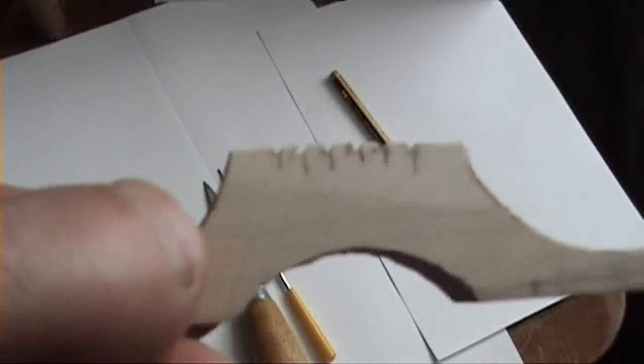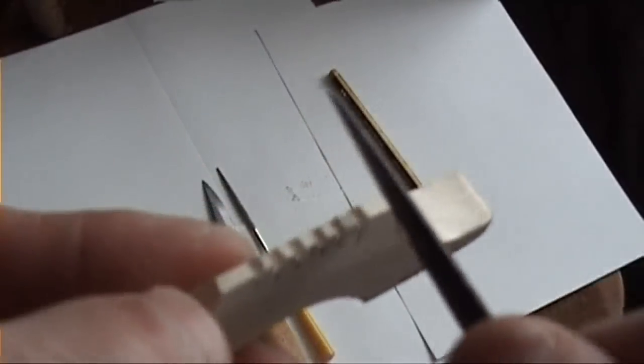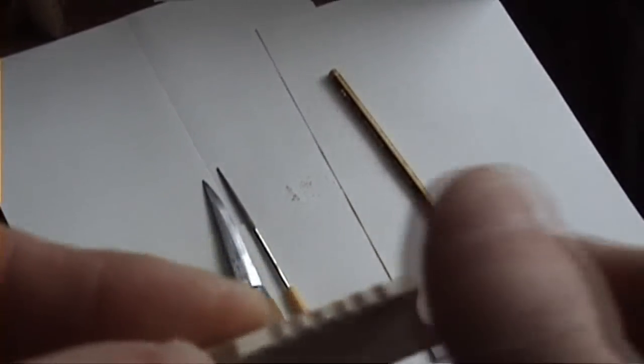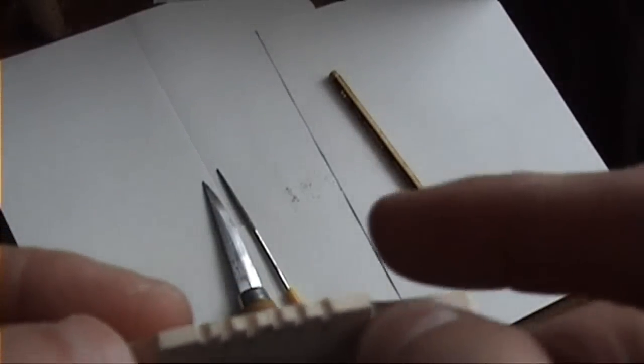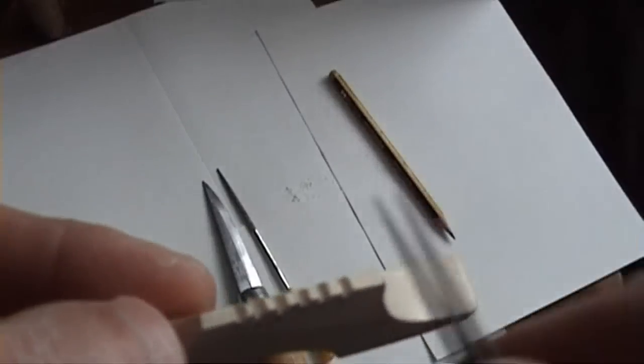And here we are. Now we can make some adjustments by angling the cut a little bit on the top here. But we'll leave the rest of the adjustments when the strings are on to see whether there's any buzzing. In that case, then we'll just round the top off a little bit more.